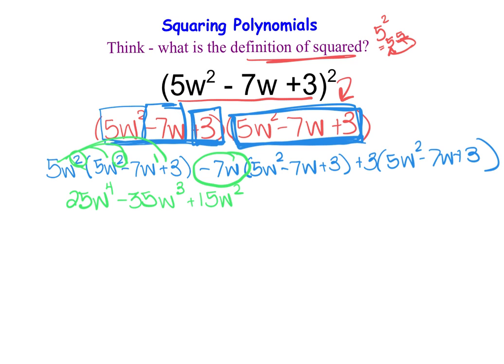Now I'm going to distribute the negative 7. So I end up with another negative 35 because negative 7 times 5 is negative 35. Then I have w to the first and w squared, which is w to the third. Then I have negative 7 times negative 7, which is a positive 49. Then w to the first and w to the first gives me w squared. And finally, I have negative 21, and then the w tags along.